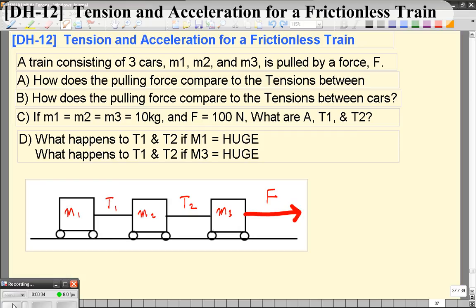Welcome to video 12. In this video, we're going to be looking at the forces acting on what's essentially a train. We have three blocks, M1, M2, M3. They're on a frictionless surface. The third block is pulled by a force F. You can think of that like a locomotive if you want.